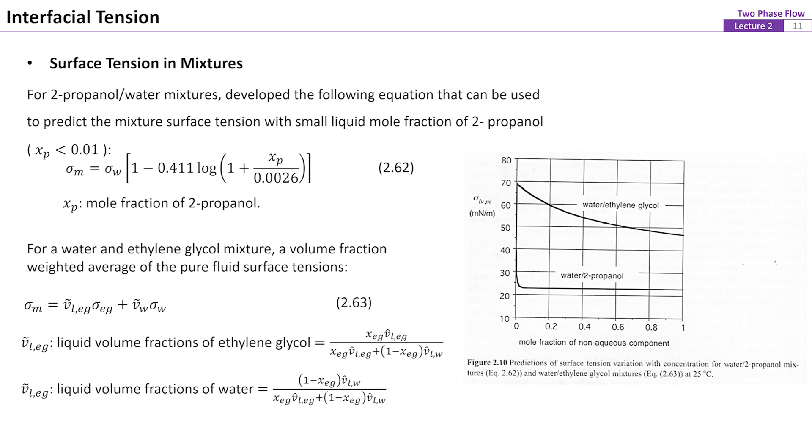For a water and ethylene glycol mixture, a volume fraction weighted average of the pure fluid surface tension was proposed as equation 63. Figure 10 illustrates the possibly great impact of the concentration on the surface tension of liquid mixtures with different combinations.